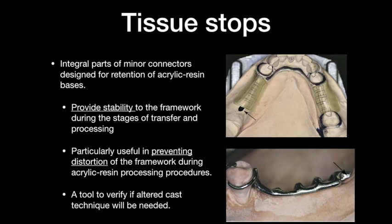We also have two minor connector design features to discuss. The first is the tissue stop — a part of the minor connector designed for retention of acrylic resin base. It can provide stability to the framework during transfer or processing, and helps prevent distortion of the framework during processing. It can also verify if an altered cast technique is needed. The tissue stop is basically located at the end of the RPD framework design.